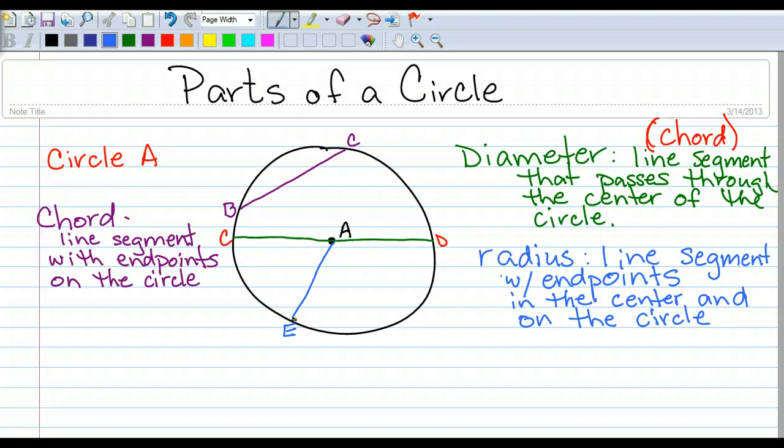When you have more than one radius, it is called radii. Radii. That's more than one radius. We don't say radiuses. We say radii.